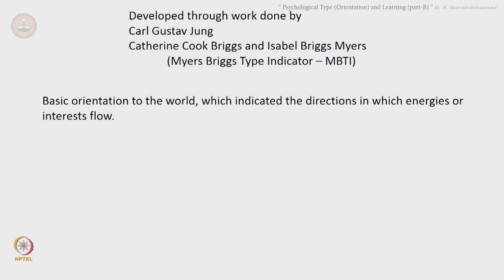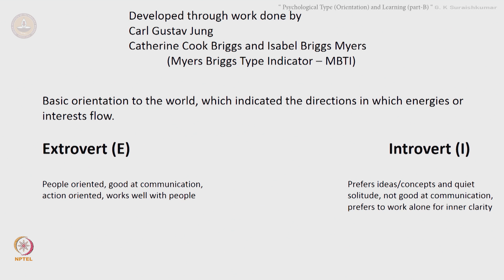The basic orientation to the world, which indicates the direction in which energies or interest flow, is the first category. It could either be extrovert or introvert. Extroverts are people-oriented, good at communication, action-oriented, and work well with people. Whereas an introvert prefers ideas, concepts and quiet solitude, is not very good at communication, and prefers to work alone for inner clarity. A MBTI study in 1983 by Macaulay et al. found that 33 percent of engineering students are extroverts and 67 percent are introverts.